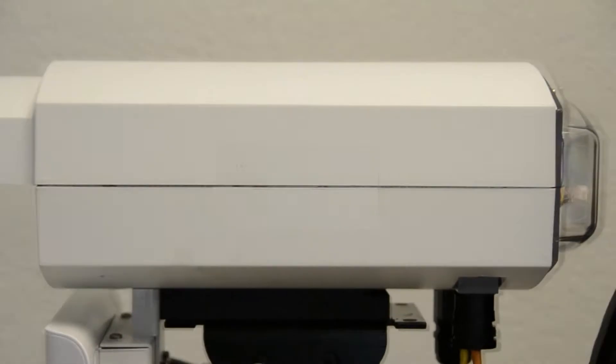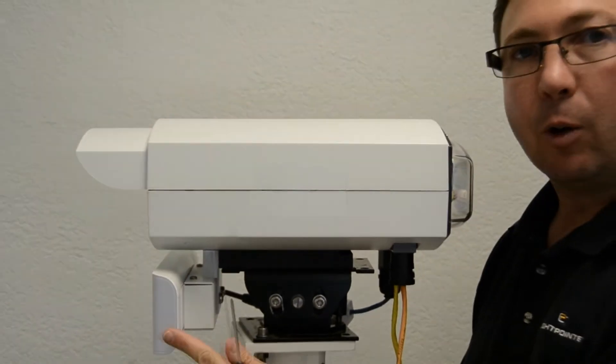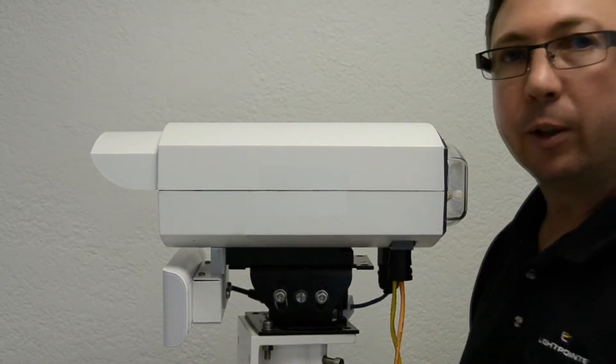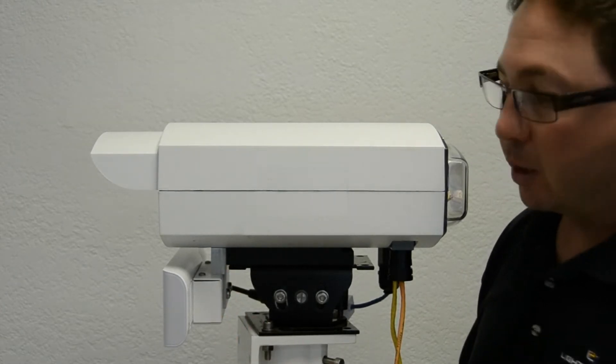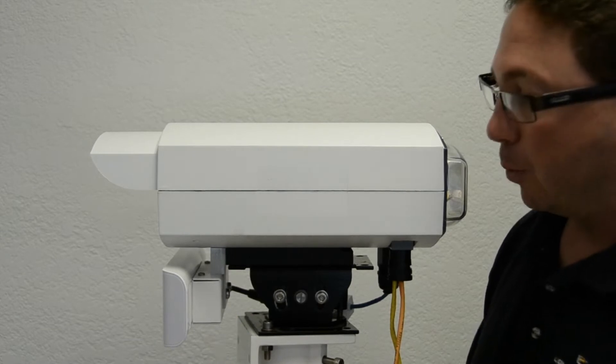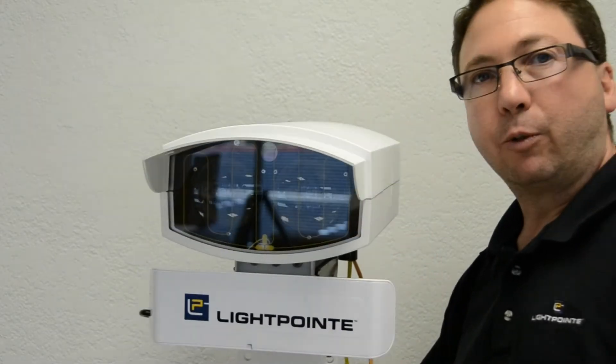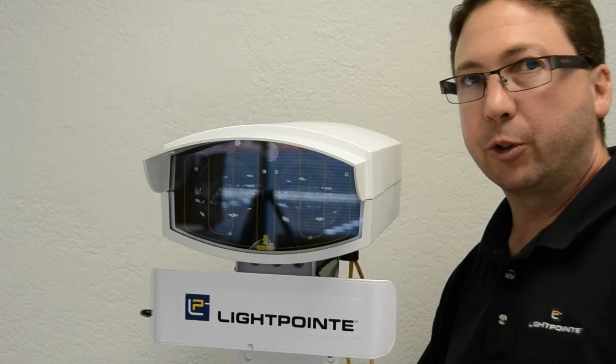So what the SXR is, is an AirLite G product with a built-in radio. I've turned the unit to the side to be able to show you what the radio looks like, as well as the bracket that comes with it to attach the radio. You can take a look from the front, also see what it looks like.